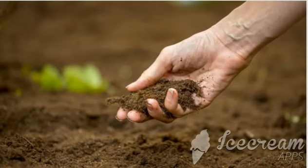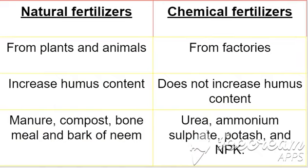Fertilizers are natural or chemical substances that contain one or more nutrients essential for plant growth. Natural fertilizers are obtained from plants and animals and increase humus content in the soil. Examples include manure, compost, bone meal, and bark of neem.